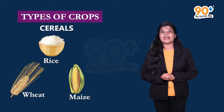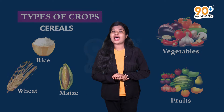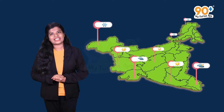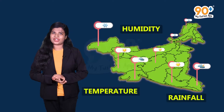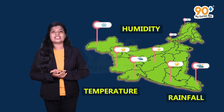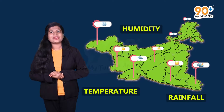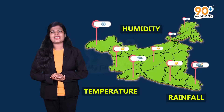You must have come across different types of crops in your daily life. These crops include cereals like rice, wheat, and maize, as well as vegetables and fruits. As you know, India is a vast country with different climatic conditions, which includes temperature, humidity, and rainfall. These climatic conditions vary from one region to another and also lead to different seasons.